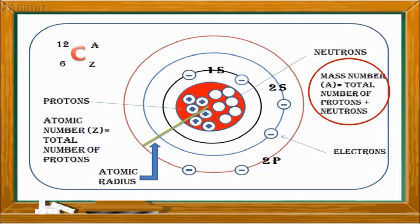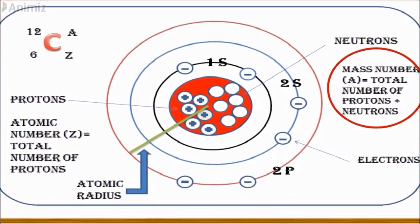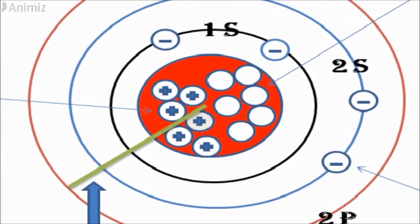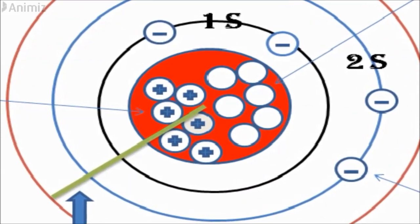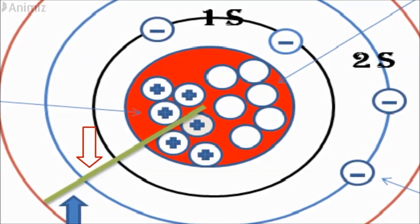The mass number, represented by the letter A, is defined as the total number of protons and neutrons in an atom. The atomic radius of a chemical element is a measure of the size of its atoms, usually the mean or typical distance from the center of the nucleus to the boundary of the surrounding cloud of electrons.